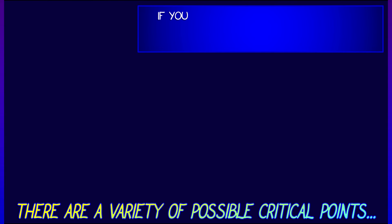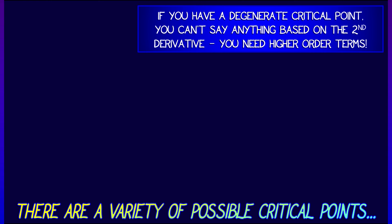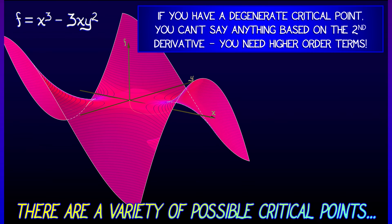So that's the basics of local maxes, local mins, saddles — but what about the degenerate case? If you have a degenerate critical point, then you can't necessarily say anything just based on the second derivative, of course.